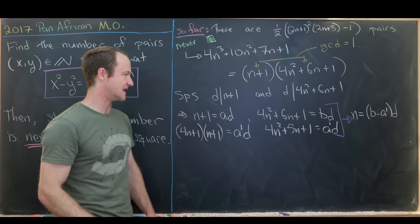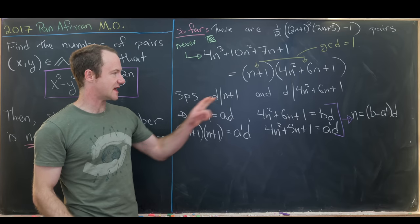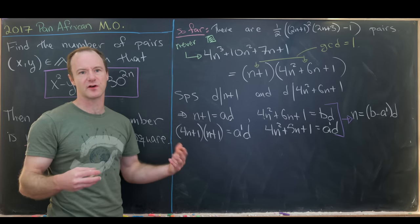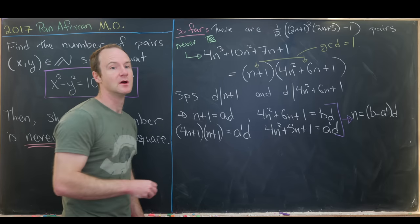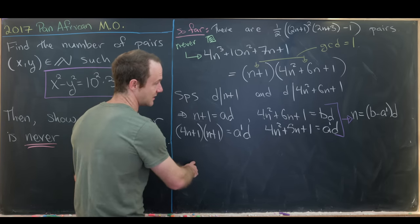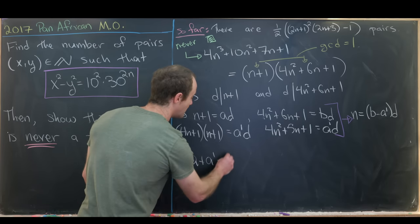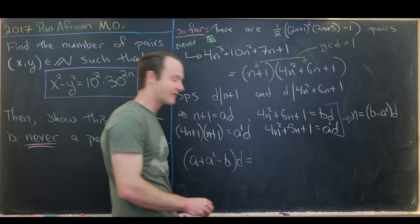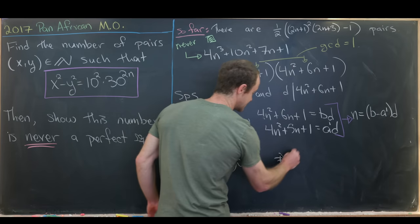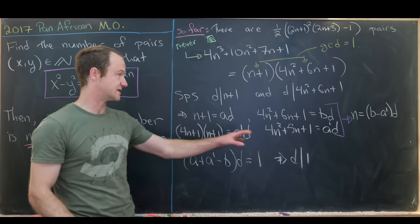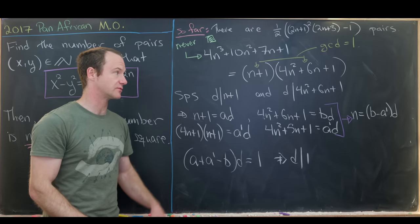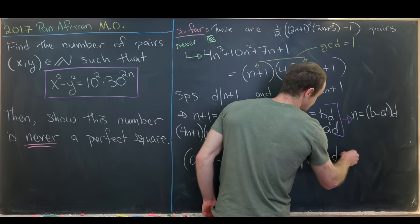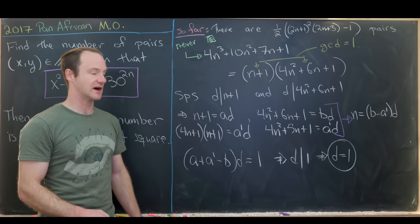We now have d divides n and d divides n+1. Since consecutive integers are relatively prime, we can verify by forming a linear combination: a + a' − b times d simplifies to 1, showing d divides 1, so d = 1. Thus gcd(n+1, 4n²+6n+1) = 1.